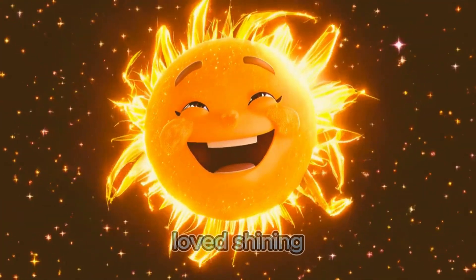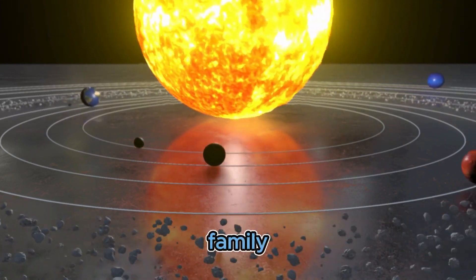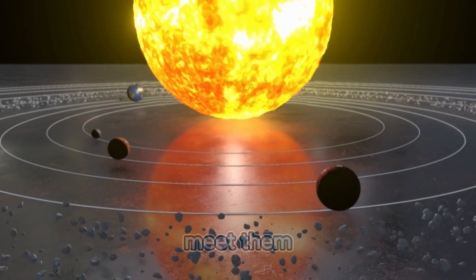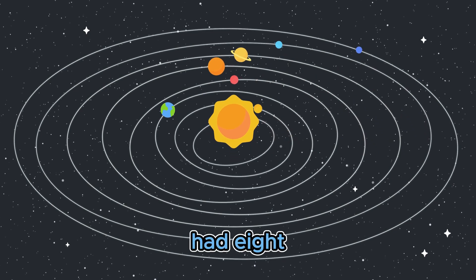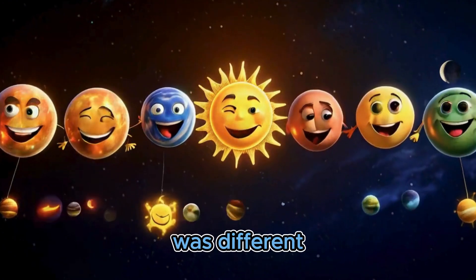The sun loved shining its light and keeping its family warm. And who was in the sun's family? Let's meet them. The sun had eight little planets who loved to dance around it. Each planet was different and special.